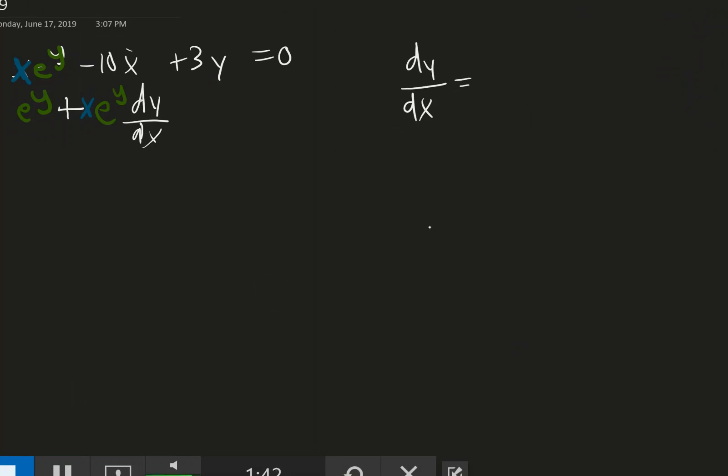Okay, take the derivative of this with respect to x, we get negative 10. Take the derivative of this with respect to x, we would get 3. And that time I took the derivative of y with respect to x. And the derivative of 0 is just 0.